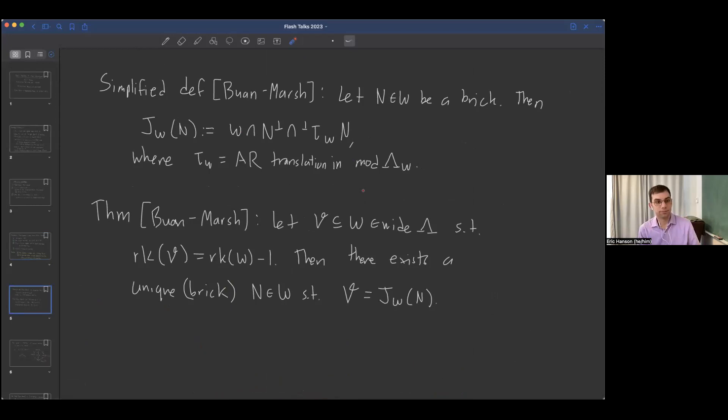My simplified definition is this relative Jasso reduction studied by Bethany and Ozluk. If we take N in W, by my assumption I can just say N is a brick. Then I can define the Jasso reduction of N in W to be the intersection of W with N perp and perp tau W N, where tau W now is the AR translation in mod lambda W. It might be different from the AR translation in the original algebra.